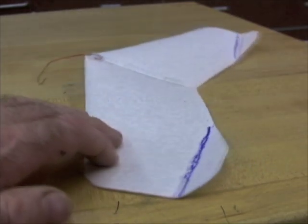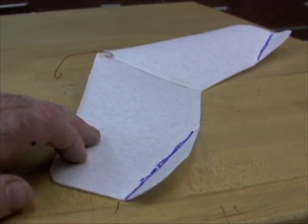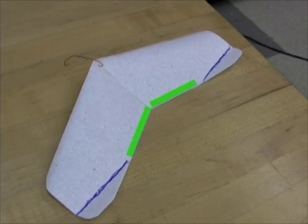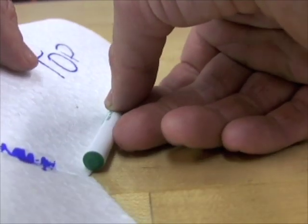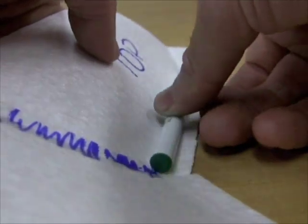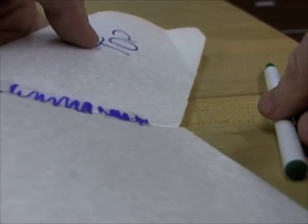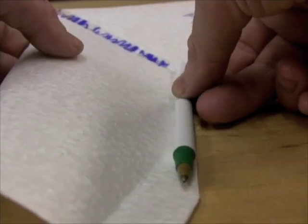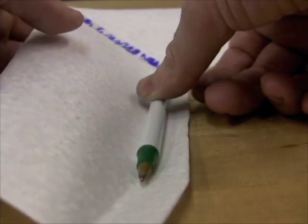I know the elevons already curve up and back, but I'm talking about something much more subtle. In the middle of the wing, where there are no elevons, with the glider right side up and the front tipped up a little, roll just a little bit of curve into the part of the wing without elevons. It's much less curved than in the front.